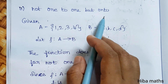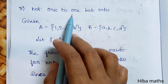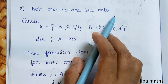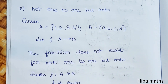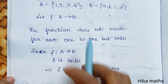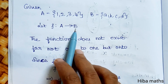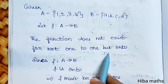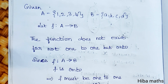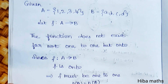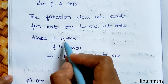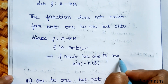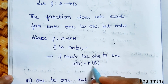Second subdivision: not one-to-one but onto. Since |A| = |B| = 4, if a function from A to B is onto, it must also be one-to-one. So a function that is not one-to-one but onto does not exist for these sets.